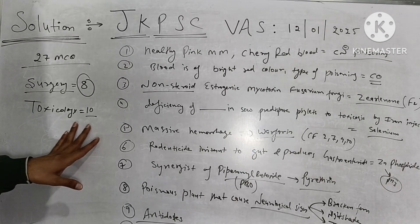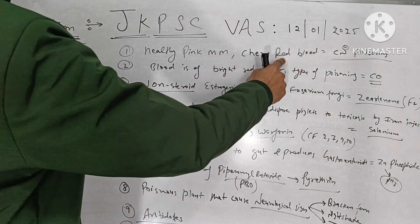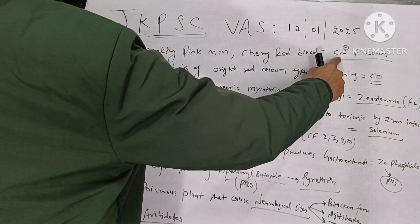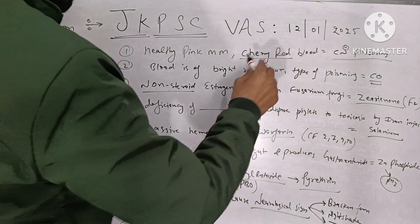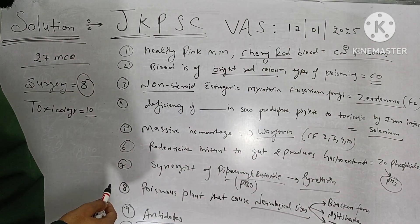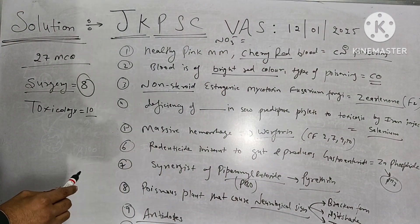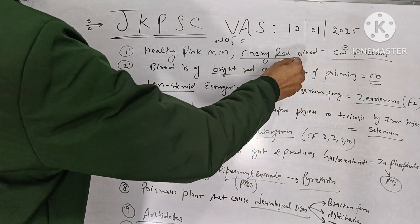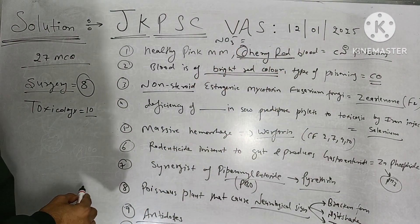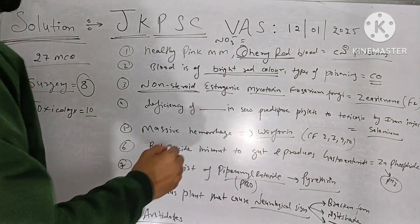In toxicology, healthy pink mucous membranes and cherry red blood are associated with cyanide poisoning. Bright red color blood is carbon monoxide poisoning, and in nitrate poisoning the blood is chocolate brown colored. Cherry red is cyanide, and bright red is carbon monoxide.